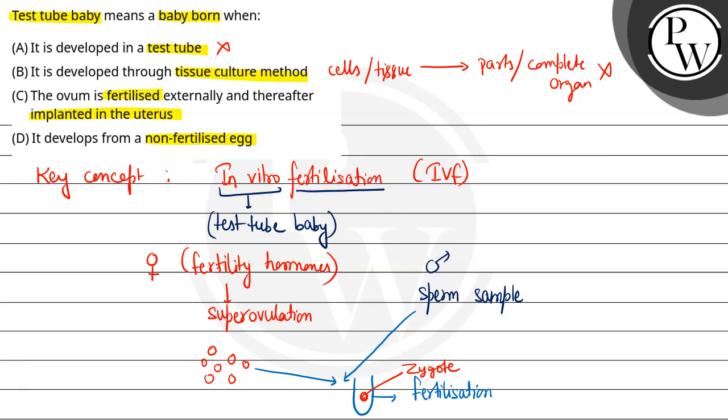So here the correct option is the third option: the ovum is fertilized externally and thereafter implanted in the uterus.